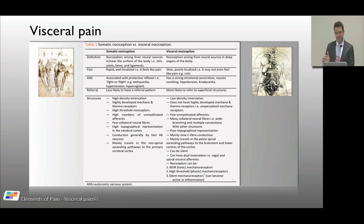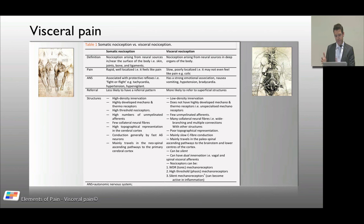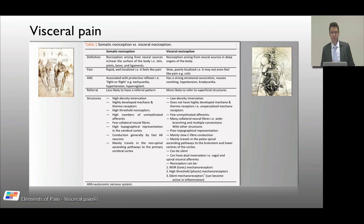Somatic nociception is highly specialized, whereas visceral nociception is more rudimentary, and that is also visible in the pathways it travels. Somatic nociception travels via the neospinal ascending pathways to the primary cerebral cortex, whereas visceral nociception travels via the paleospinal tracts — the older tracts — reaching the brainstem and lower brain centers rather than the outer cortex.